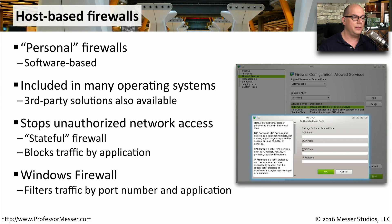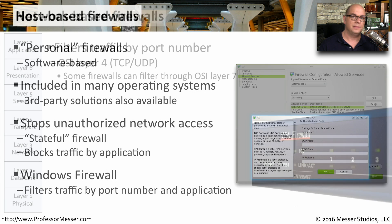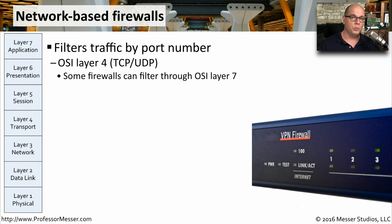In Windows, you'll commonly see the Windows firewall being used for this. It allows us to filter traffic by port number, by application, or any combination of those in and out of your Windows device. We also commonly rely on network-based firewalls, both at our homes and our businesses, to prevent somebody from accessing our internal network.